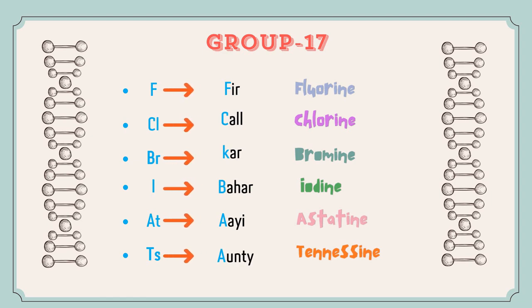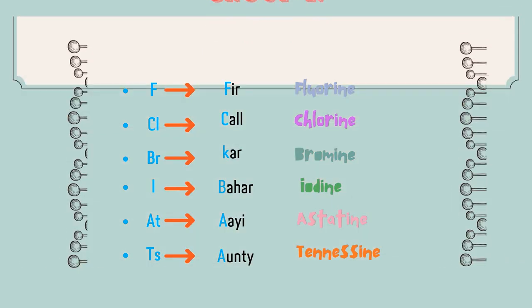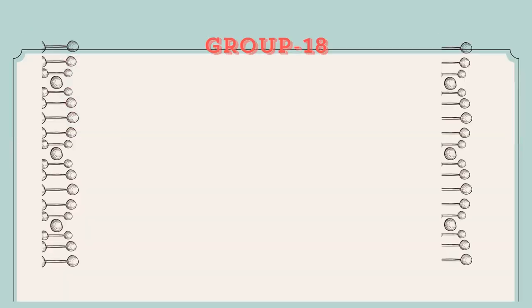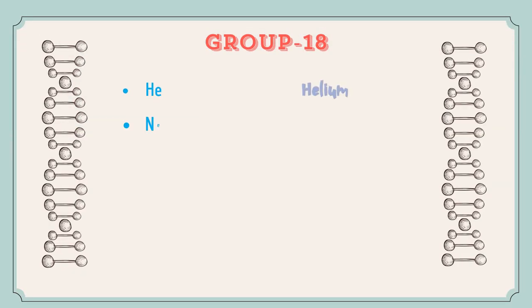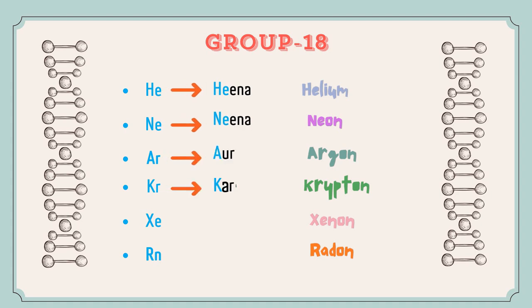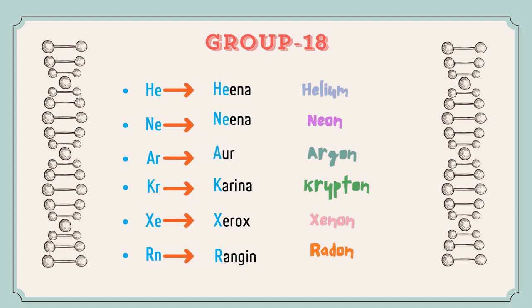The last group of the P-block is Group 18, which majorly consists of noble gases. The elements are Helium, Neon, Argon, Krypton, Xenon, and Radon. The trick for this is: 'Heena Neena Or Kareena Xerox Rangina' — very easy, right?